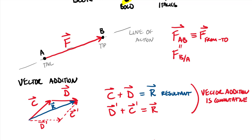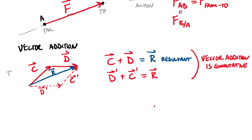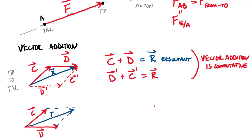The other way to add vectors is using a parallelogram. Instead of tip-to-tail, we put the tails of C and D together — with D horizontal — and we complete the parallelogram. The diagonal of that parallelogram is our resultant force R. We can write the same equations associated with the parallelogram technique.